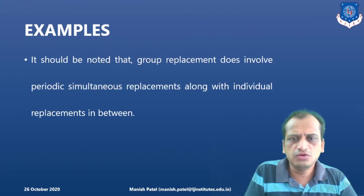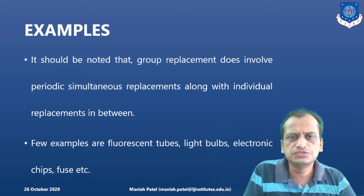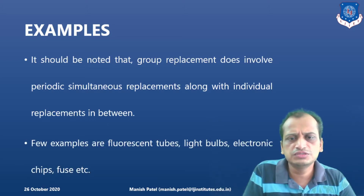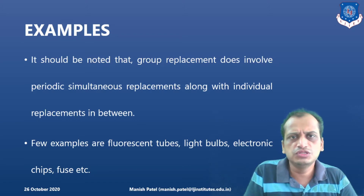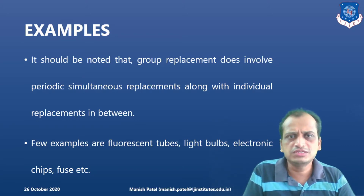Let's look into an example. The examples I gave — tubes, fluorescent tubes, light bulbs, electronic chips, fuses — these categories fall into the group replacement category.